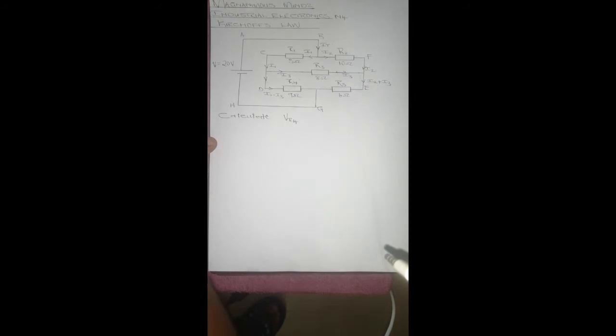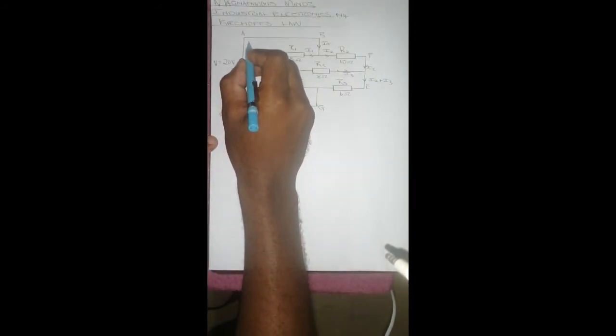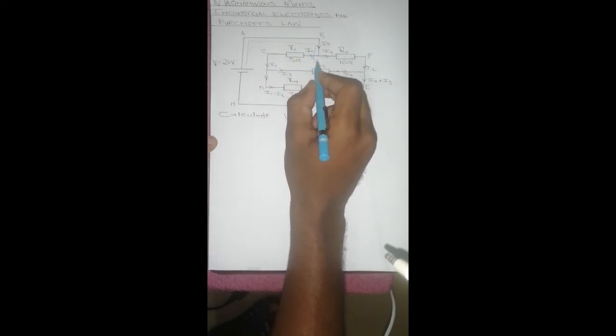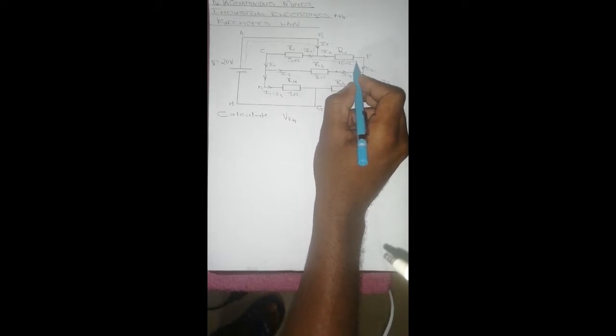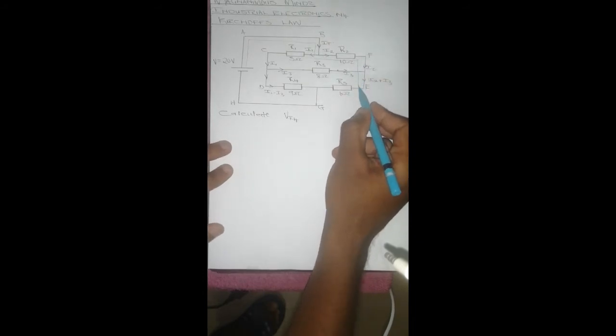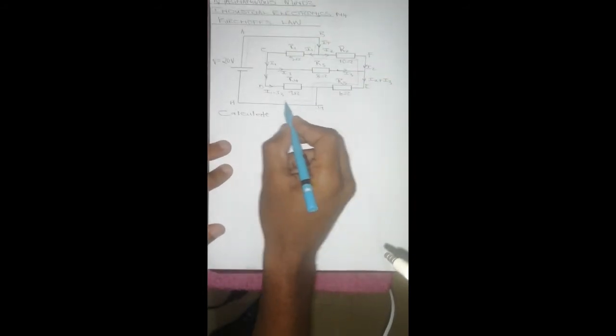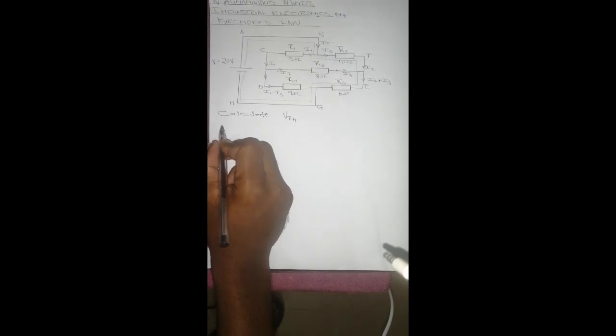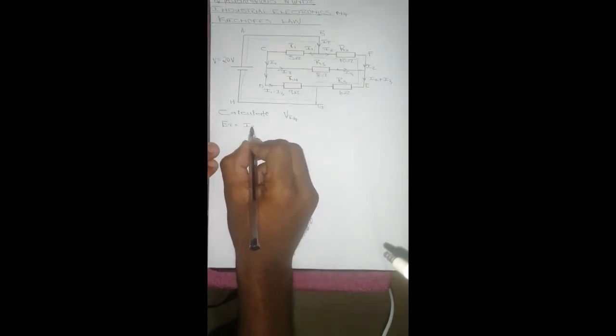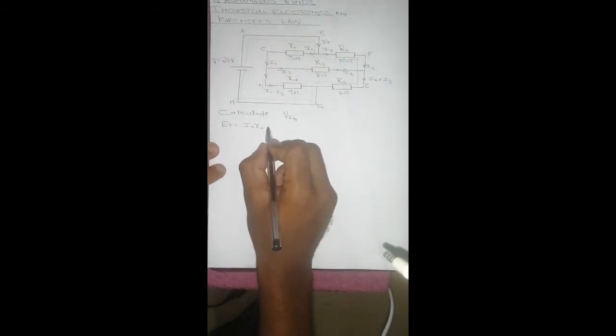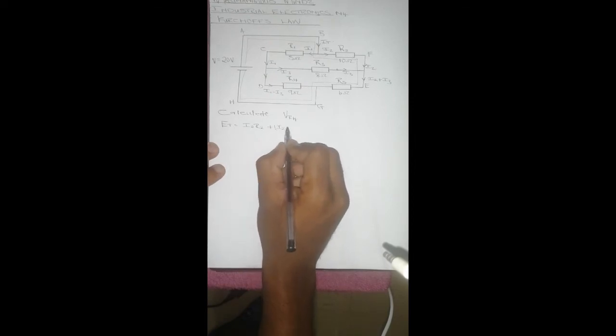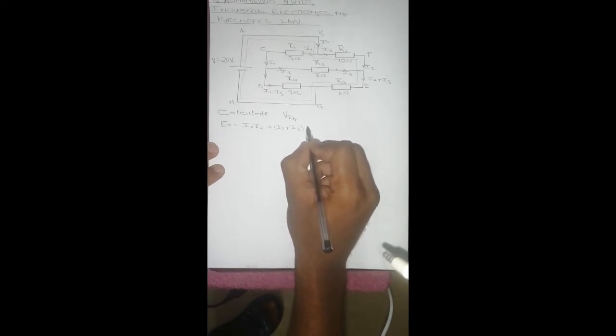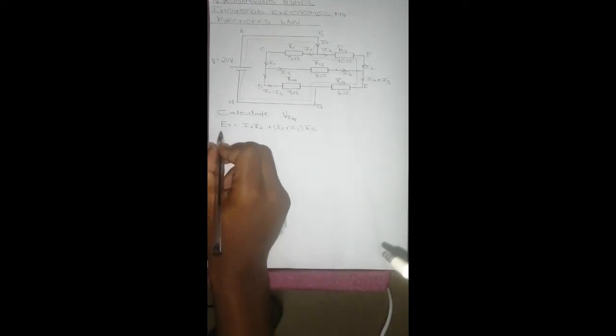Let's see for the first loop: this loop goes A, B, and then it goes to F, then from F it goes to E, it goes to G, H, then back to the voltage supply. So it's going to be E equals AE, which equals I2 R2 plus (I2 plus I3) R5. This is going to be 20.